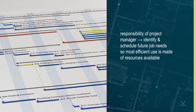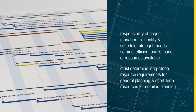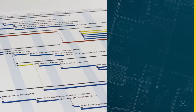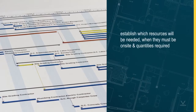It is the responsibility of the project manager to identify and schedule future job needs so that the most efficient use is made of the resources available. The project manager must determine long-range resource requirements for general planning and short-term resources for detailed planning. He must establish which resources will be needed, when they must be on-site, and the quantities required. Arrangements must be made for their timely arrival with regular follow-up actions taken to ensure that promised delivery dates are kept.